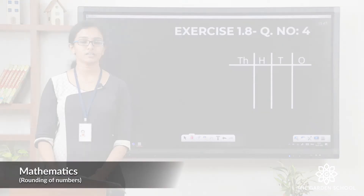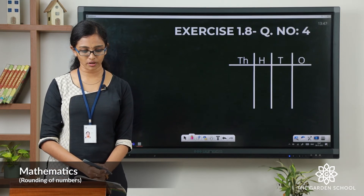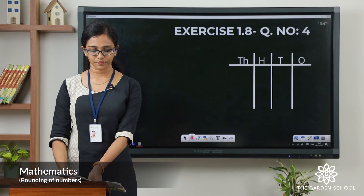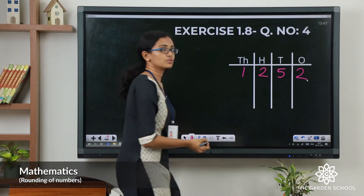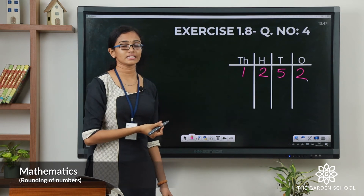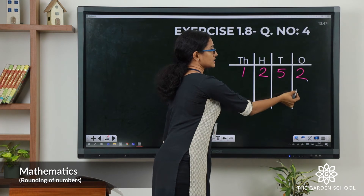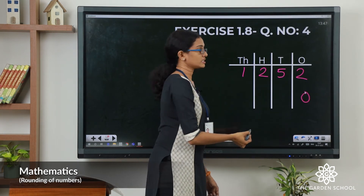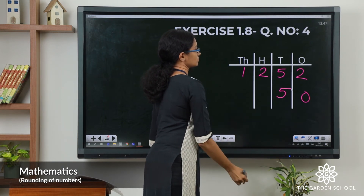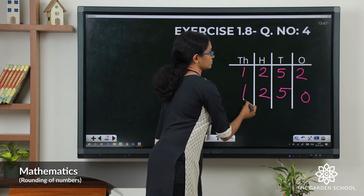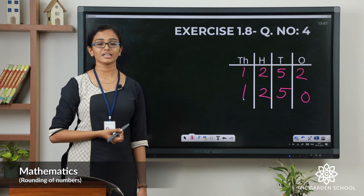Now the next question: there are 1252 ice cream cones in a shop. Round it off to the nearest 10. So the number here is 1252. We have to round it off to the nearest 10. In that case we have to check the digit in the ones place. The ones digit is 2, which is less than 5. So let us change that to 0 with no change in the tens digit. So 1252 rounded off to the nearest 10 will give you 1250.